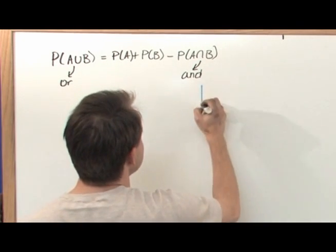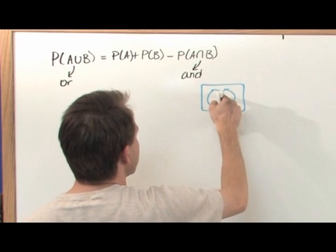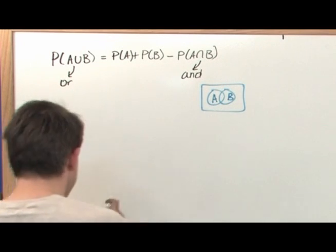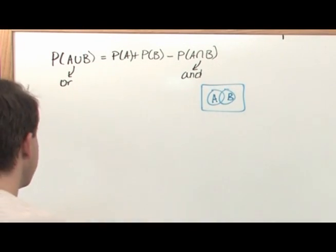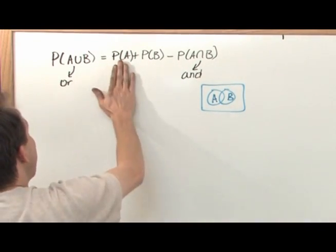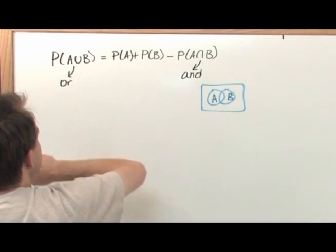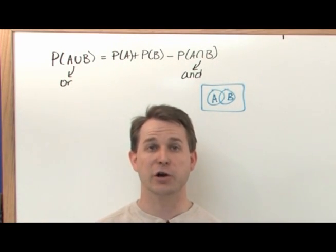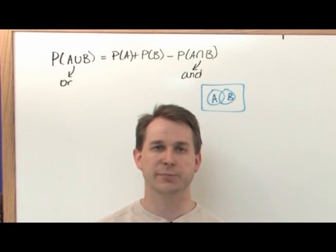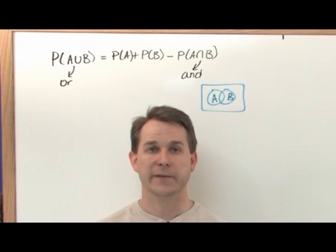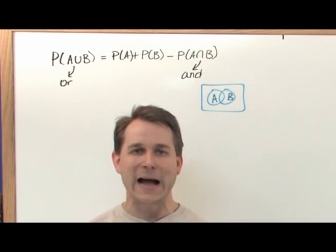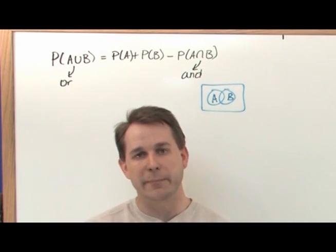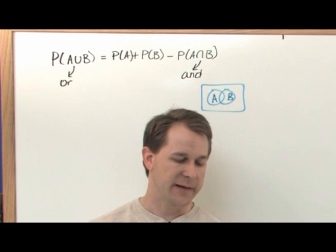We were drawing Venn diagrams in the last section with A and B, and there was a little intersected region, but what we were trying to find was A or B — so the whole thing is shaded all the way across. Notice what we were doing is adding the two probabilities together for A or B, because we're trying to make the total probability higher. If you can pull an ace or a king, the total probability should be higher than either individual event, so we add them.